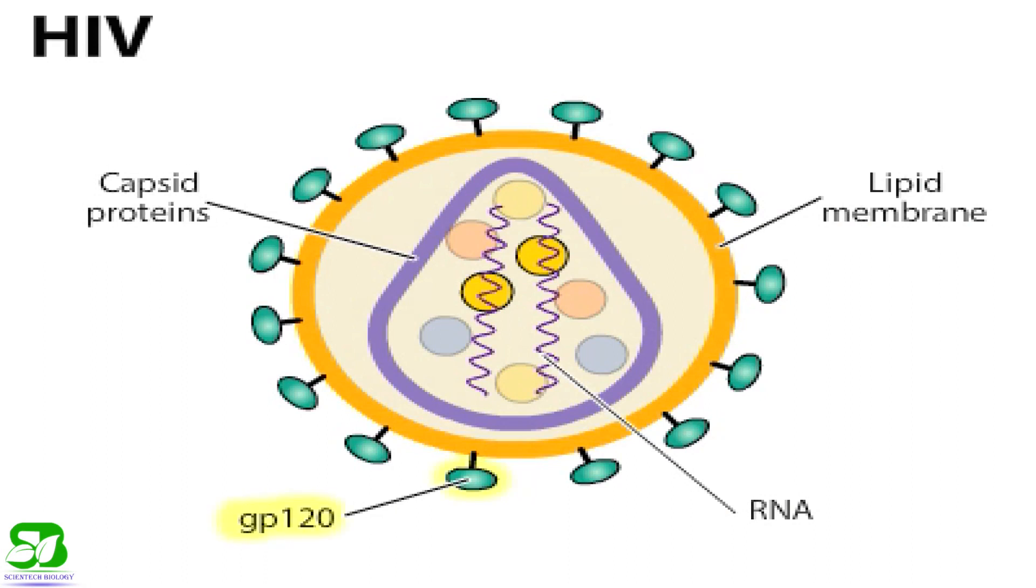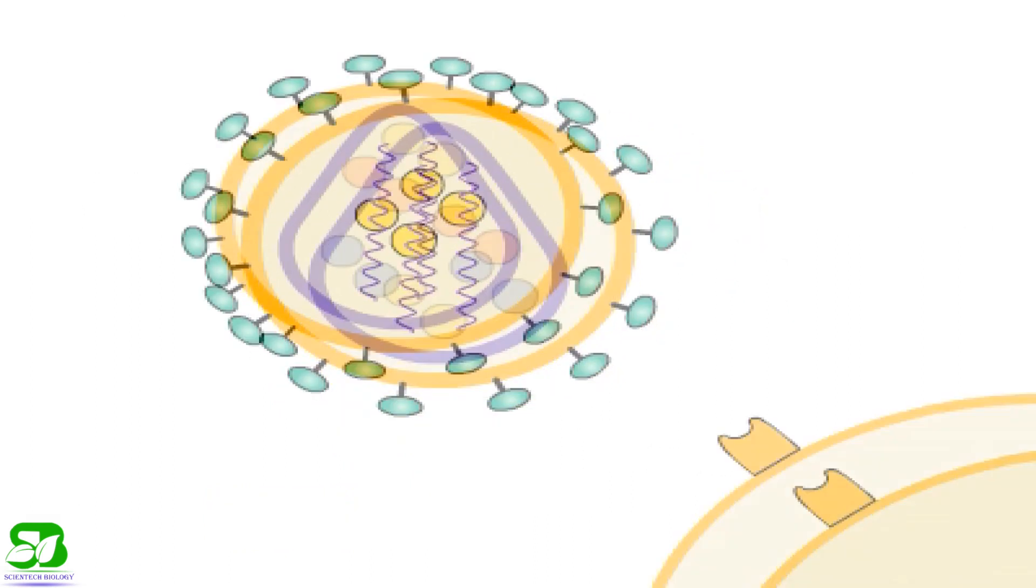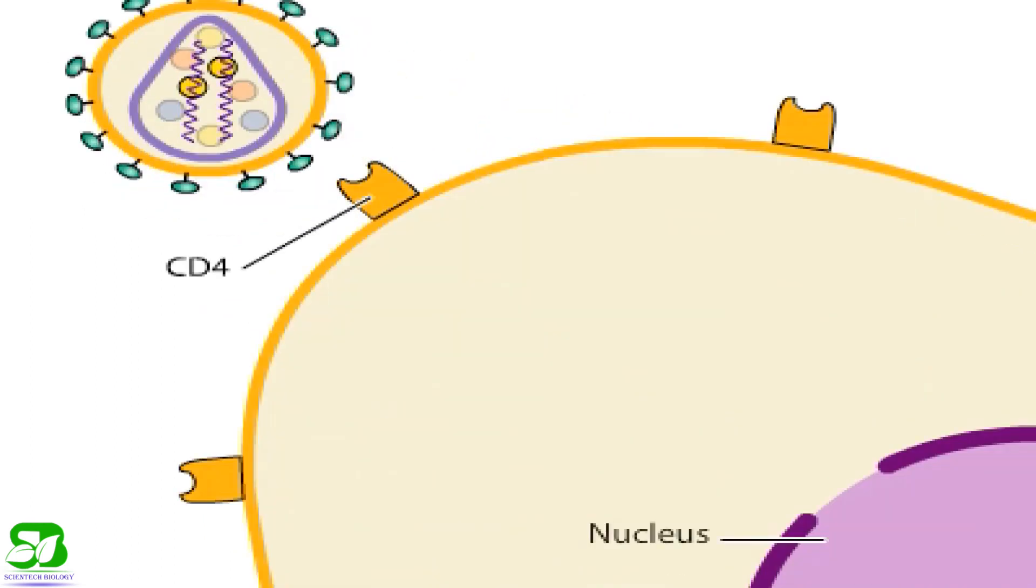HIV has surface protein called gp120 that attach to cells that have CD4 receptors on their surface. CD4 is found on immune system helper T lymphocytes and on scavenger cells called macrophages.